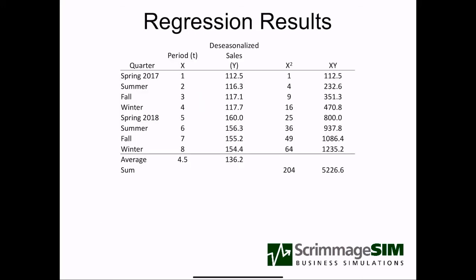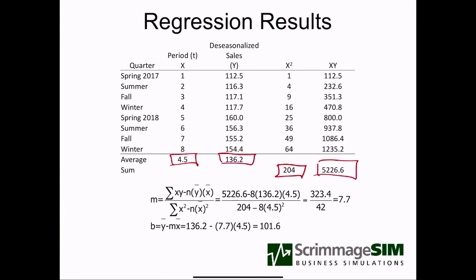Just like with the regression model, we have eight data values and get averages for x (the period) and y (the de-seasonalized sales), plus the sum of x-squared and sum of xy. With N = 8 data values to initialize the model, this gives us a slope of 7.7, which is fairly close to the 10 we estimated — so we should feel comfortable about that. When we plug the slope into the formula for the intercept, we get 101.6, which is where we thought it would be. It looks like we didn't make any calculation errors.